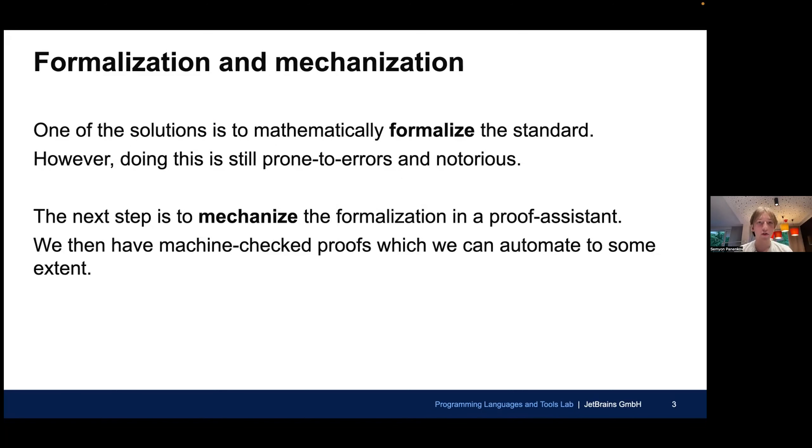There are some options how to fix this. The first solution is to mathematically formalize the standard. In other words, you represent your language constructs as mathematical objects and reason about them formally and rigorously. However, if you do this on paper, this is still prone to errors and may be notorious. This can be even hard to imagine for big real world systems like GQL.